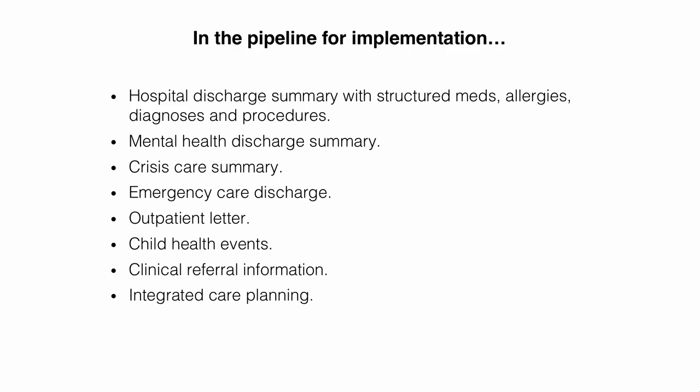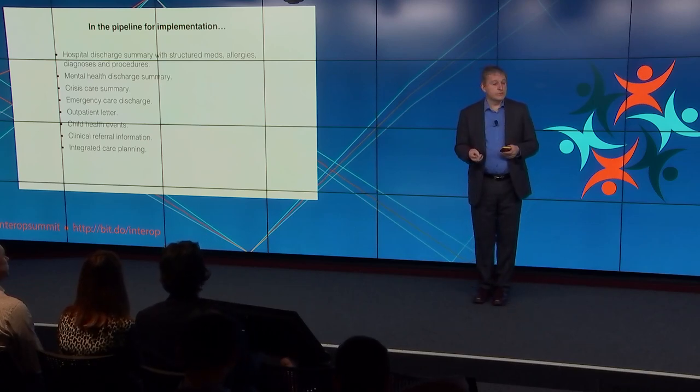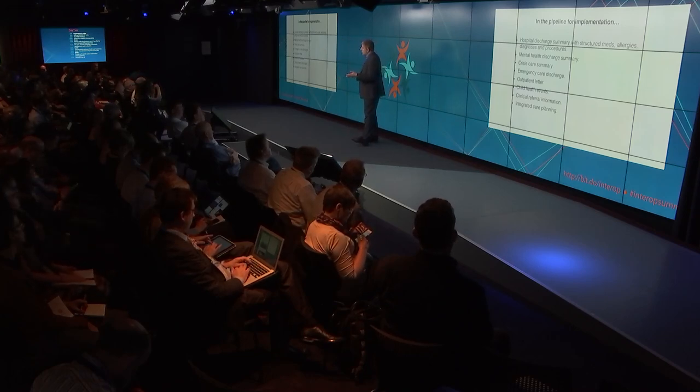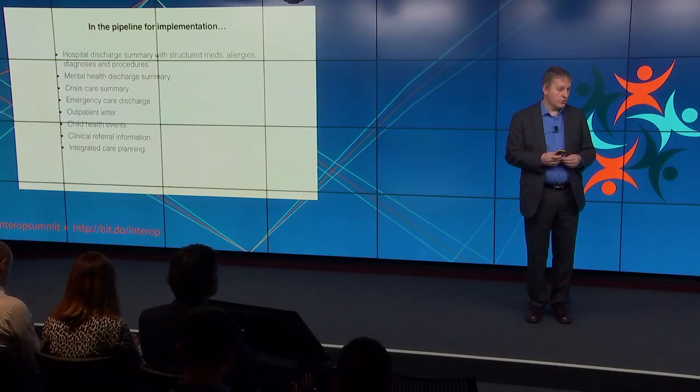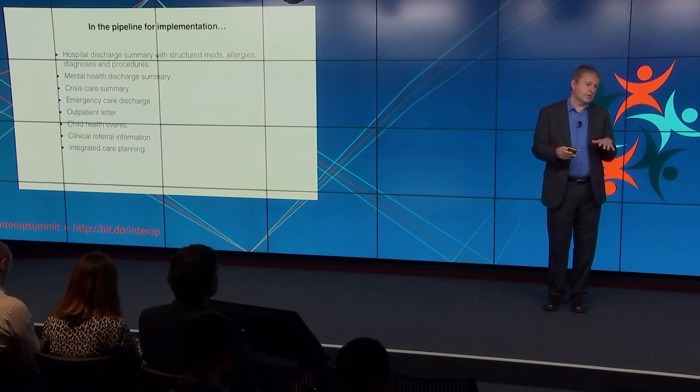There's quite a pipeline of stuff for implementation. Right now on the developer.nhs.uk website you can find implementable specifications developed by NHS Digital: the hospital discharge summary with structured data for medicines, allergies, diagnoses and procedures; a mental health discharge summary; a crisis care summary; an emergency care discharge; an outpatient letter; and a new project for child health events. Also in the pipeline are referrals and care planning. Some of it is available now on developer.nhs.uk; for the actual clinical models you can go to theprsb.org.